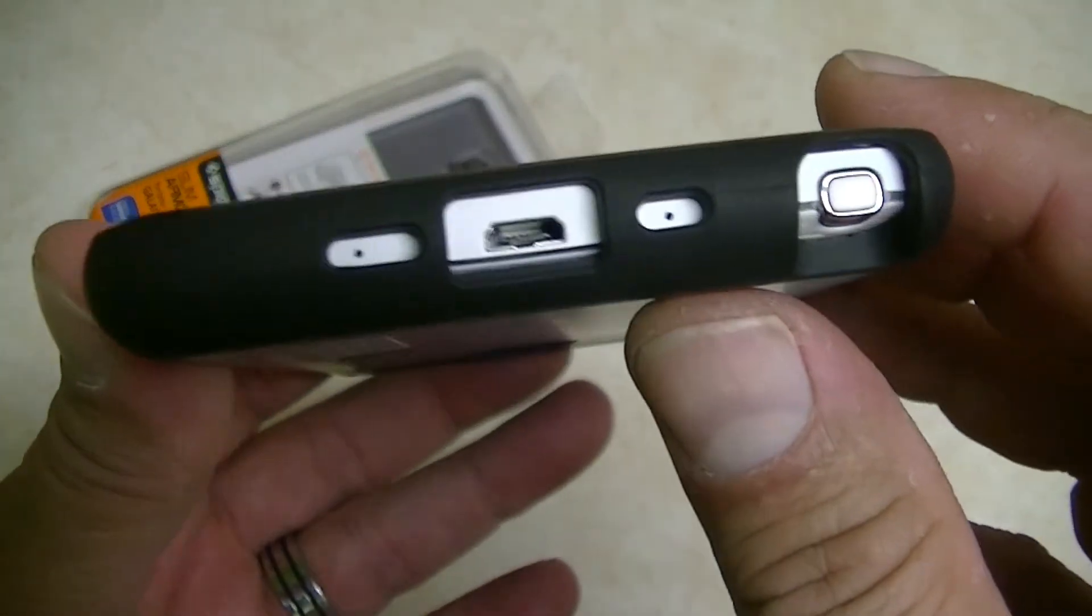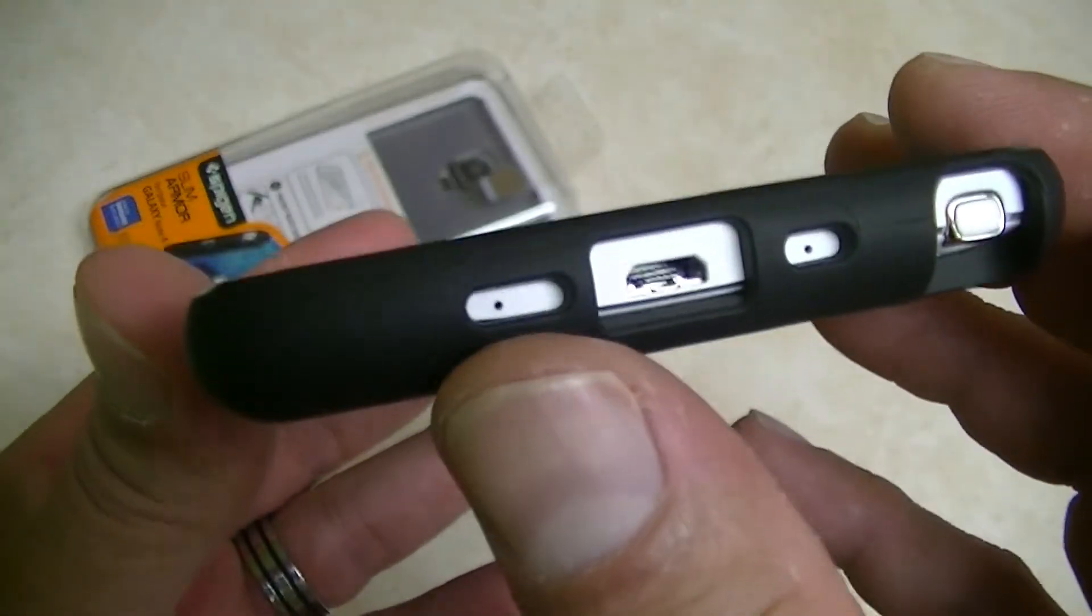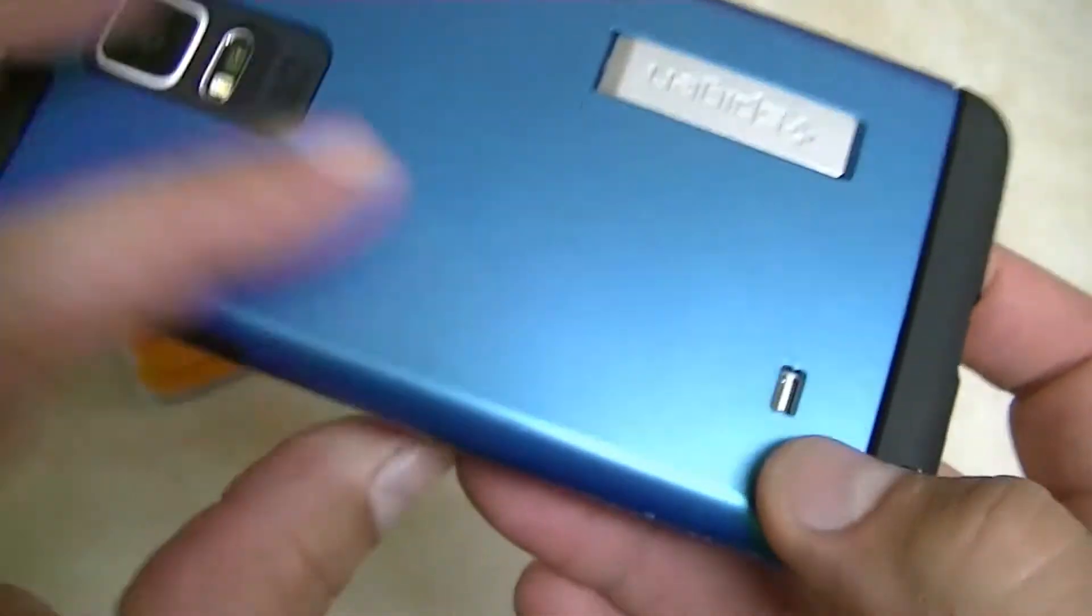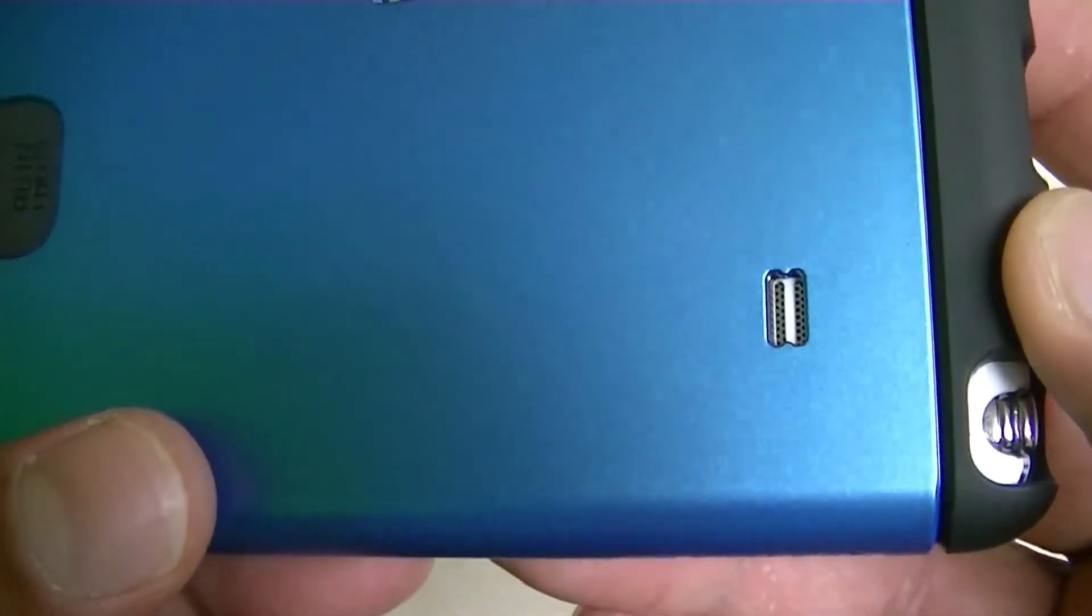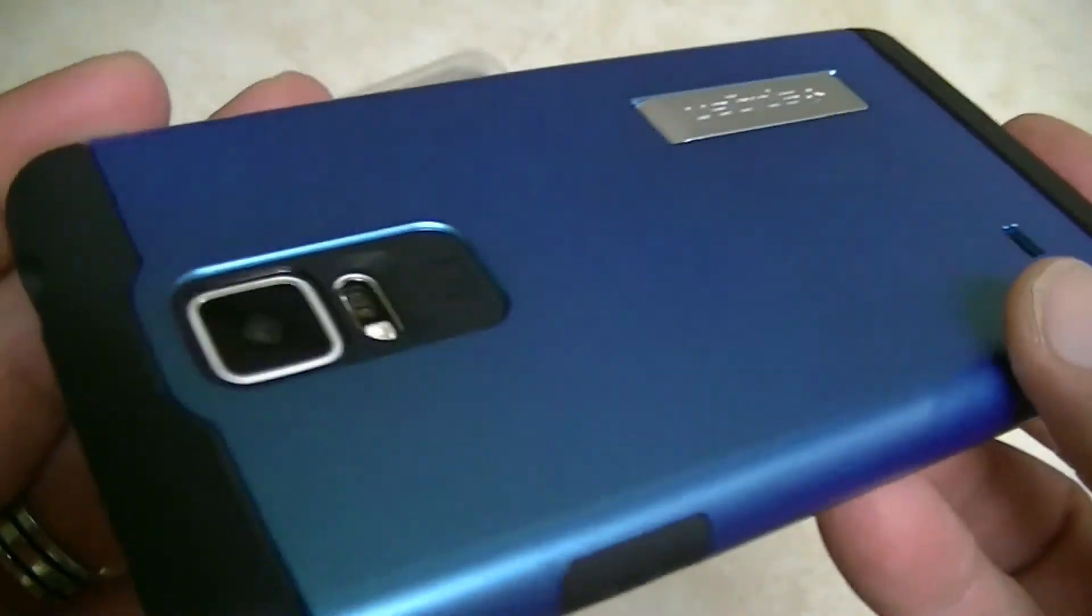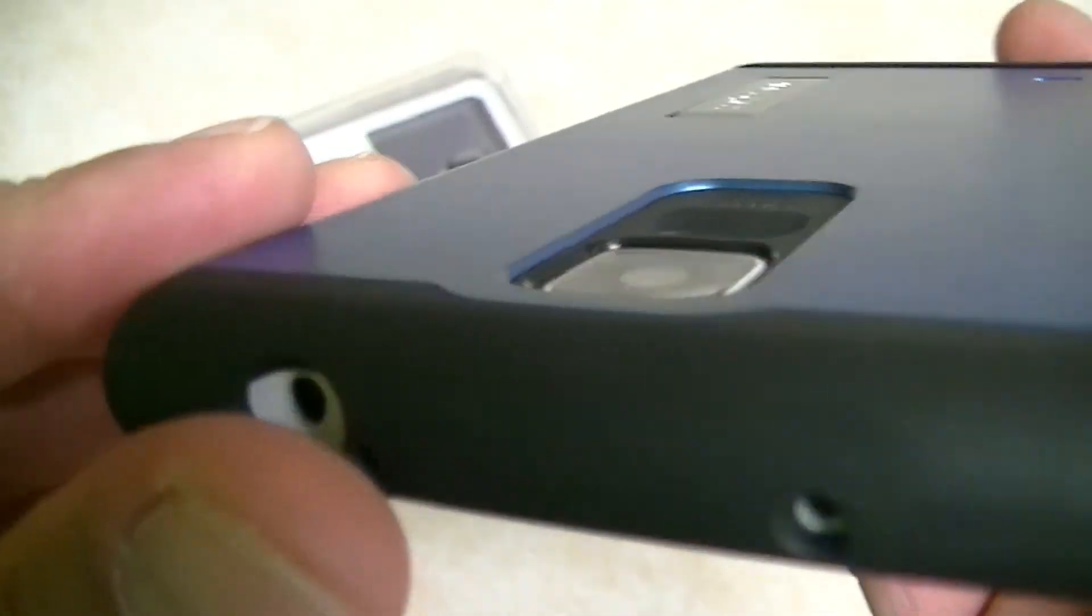On the bottom of the case, access to the S Pen, the two microphones and the USB port. On the bottom, access to the speaker grill. And as you guys can see, the camera and the flash are protected.